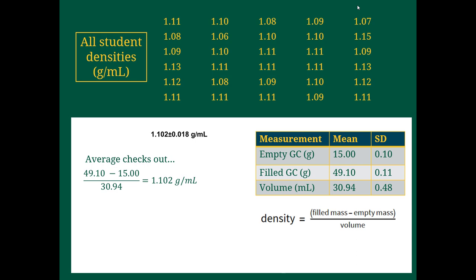To calculate the average, if I just take the average of the two masses and subtract those and then divide that by the average of the volume, I do get 1.102. So the average checks out. That's not too difficult. But if I try to do the same thing with the standard deviations by just plugging them into the density equation that I'm using, I see that I get a number that's close, but it's not the right value. It's actually a little bit larger. And if we're analytical chemists, we care about that.